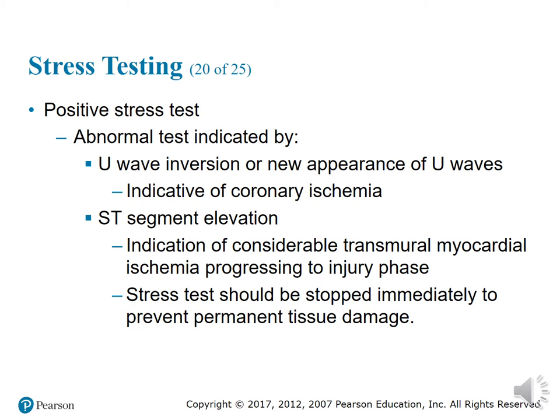Additional abnormal test findings include U-wave inversion or new appearance of U-waves, which are indicators of coronary ischemia, and ST segment elevation indicating considerable transmural myocardial ischemia progressing to the injury phase. The stress test should be stopped immediately to prevent permanent tissue damage. Refer back to chapter 13 for more on this.